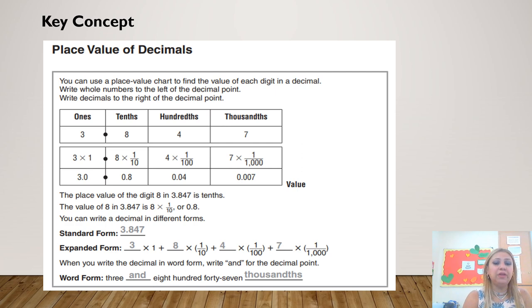For example, if I want to read this number, I am going to read it as three and eight hundred forty-seven thousandths. Don't forget to end your number with the word thousandths or hundredths or tenths. And remember that you are going to read the decimal point as and. And this is called the word name or the word form. It's the way you read the number.